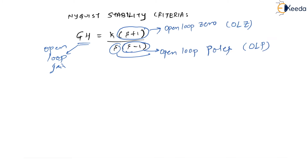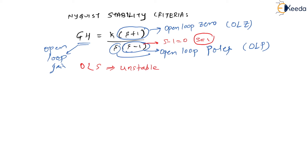If you equate s minus 1 equal to 0, you find s equal to 1, which means you have got one pole on the right half of the s-plane. This means the open loop system is unstable.